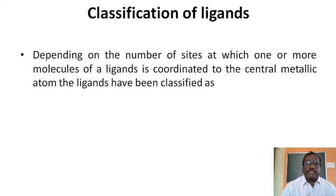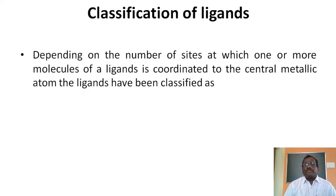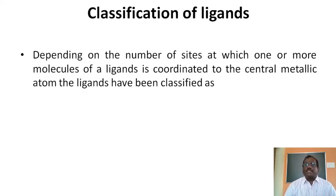Varieties of ligands are known in coordination compounds, mainly through the presence of the complex ion. In the complex ion, the central metallic ion is surrounded by a suitable number of ligands through coordinate-covalent bonding. These ligands can be classified based on the presence of donor atoms and the character of the ligands, depending on the number of sites at which the ligand is coordinated to the central metallic atom.